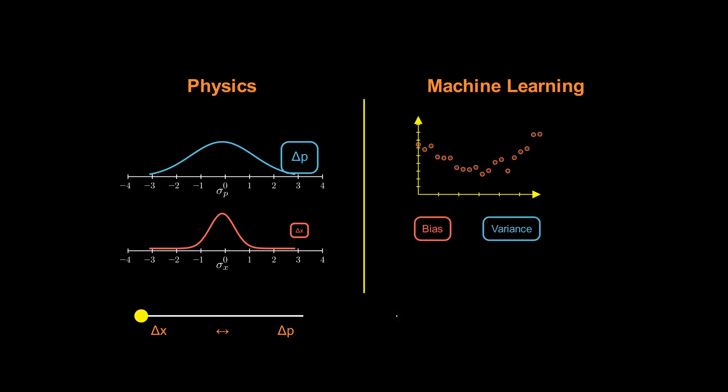In machine learning, it's not a law of nature, but something similar often happens. If you reduce bias by making the model more flexible, you often increase variance. And if you reduce variance by making the model simpler, you often increase bias.